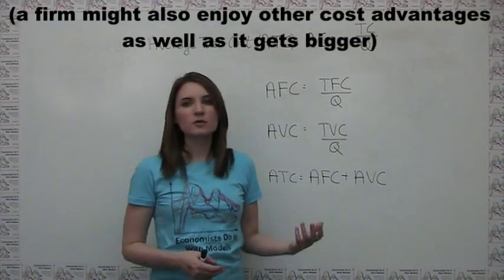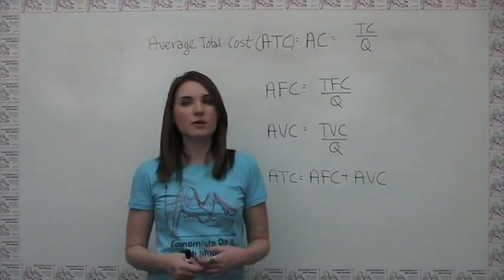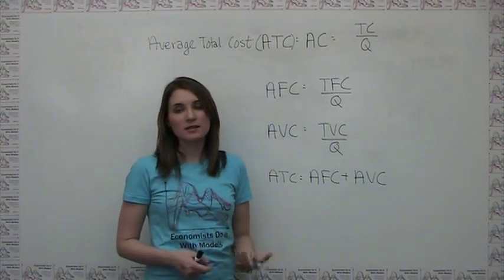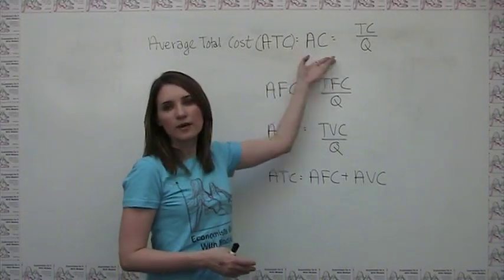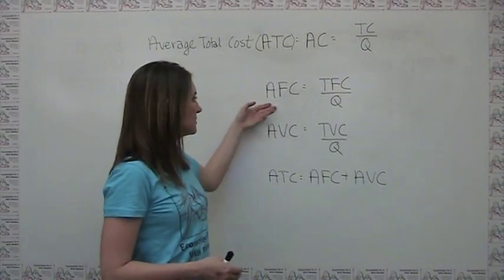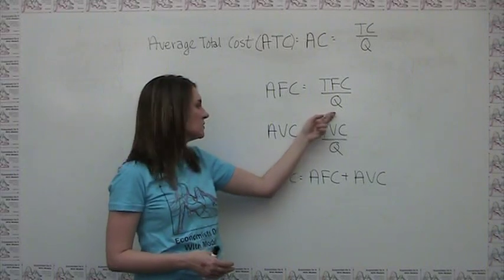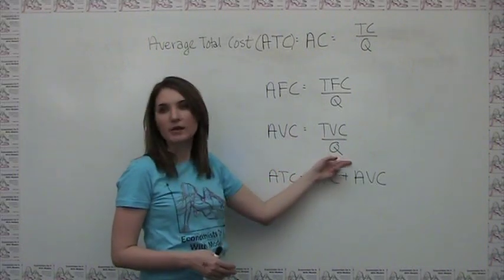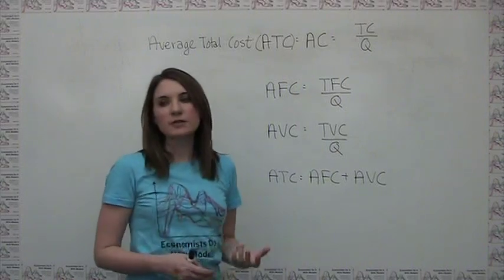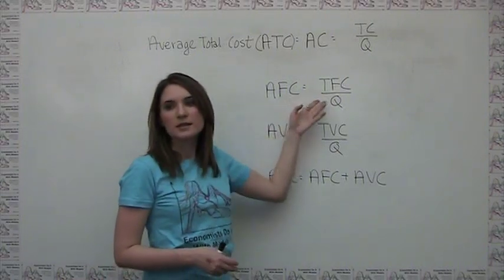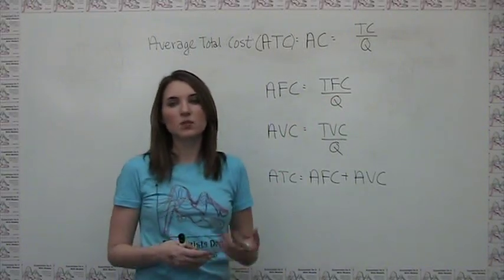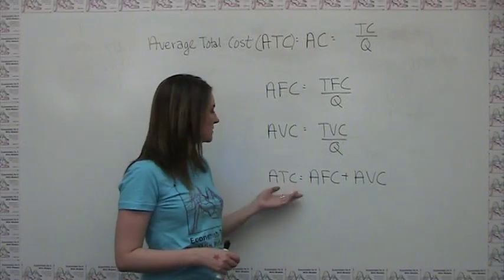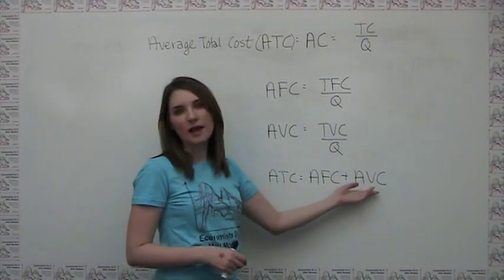Eventually, average total cost usually begins to increase as quantity increases and the firm needs to hire more resources in order to coordinate production. We can also define average fixed cost and average variable cost in a similar way: average fixed cost is total fixed cost divided by quantity produced, and average variable cost is total variable cost divided by quantity produced. Note that average fixed cost decreases steadily as quantity increases, since the total fixed cost doesn't change but gets spread out over more and more units. Average total cost is simply the sum of average fixed cost and average variable cost.